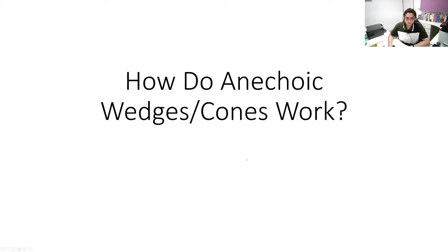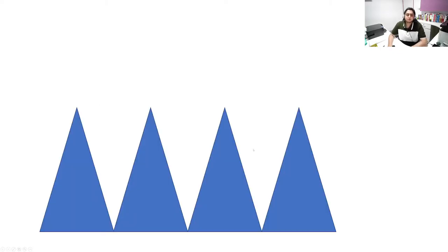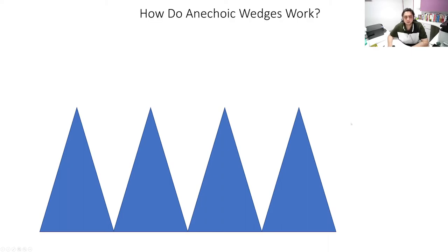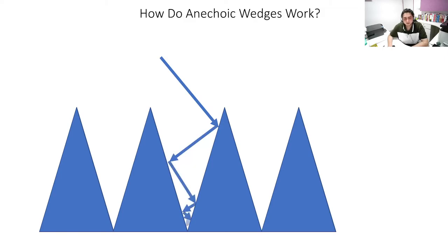Let's see how anechoic wedges don't let any reflections go back into the anechoic chamber. Here I've shown you four wedges. Suppose a wave is incident upon one of the wedges — I've approximated the wave to be a ray. This wave hits the wedge; some of it gets absorbed and some of it gets reflected. The same process repeats on and on until the sound dies out to below the background noise level of the anechoic chamber.